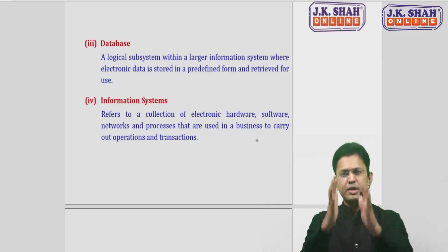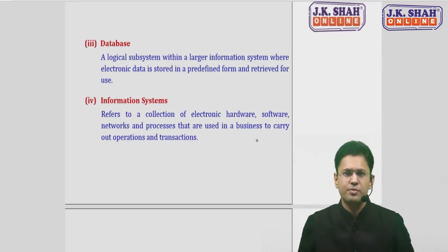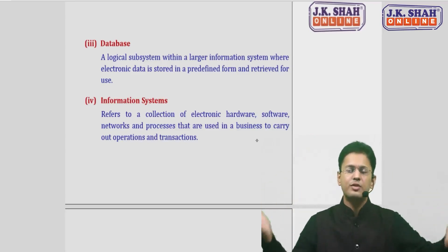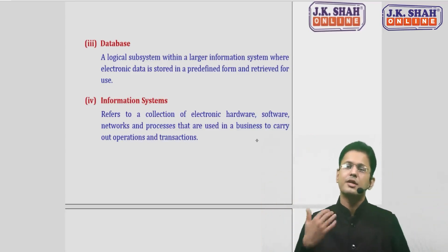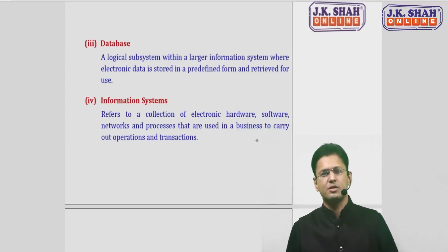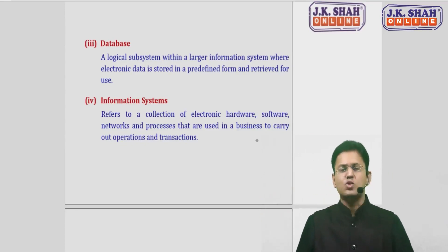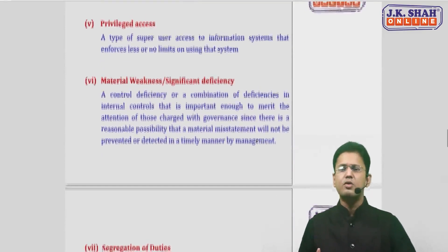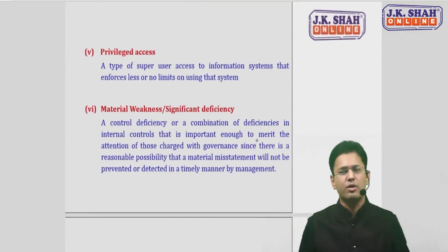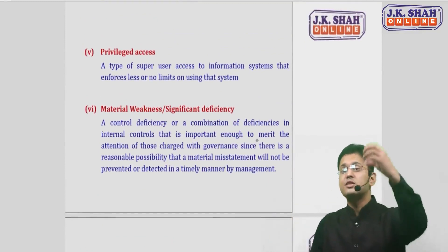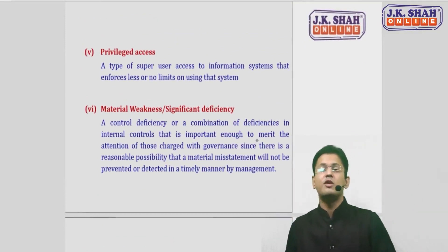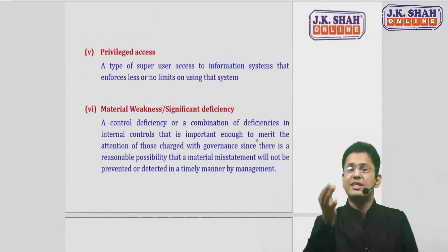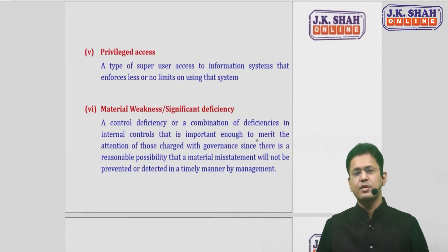An information system is a collection of hardware, software, network, database, and processes used to carry on business operations and transactions. The next term is privileged access. You may have heard the word access or privilege before, but privileged access refers to users in the organization who have unlimited or unrestricted access to the system — known as super users.